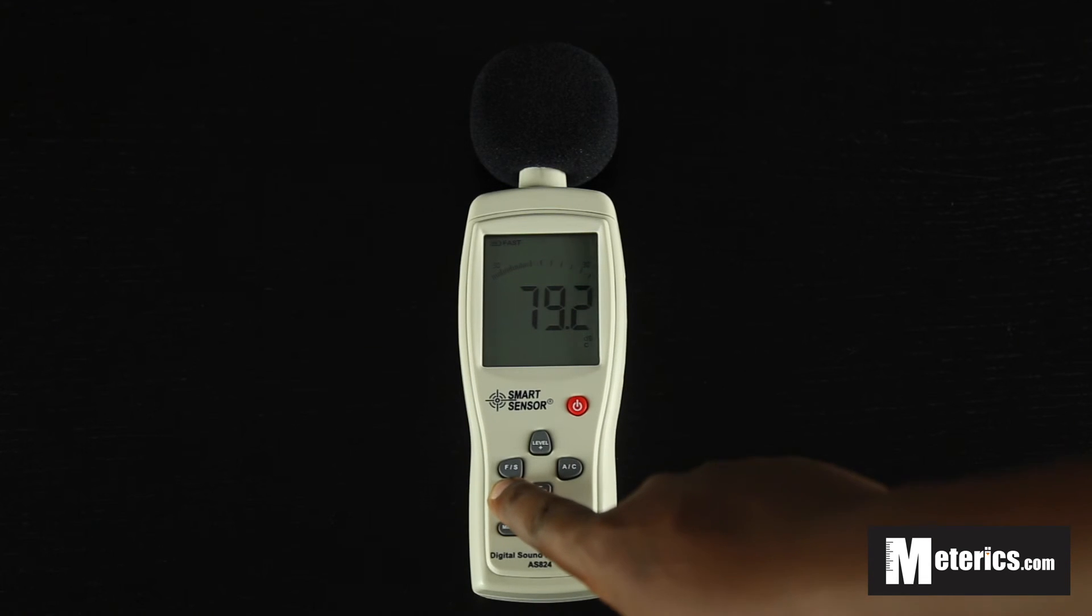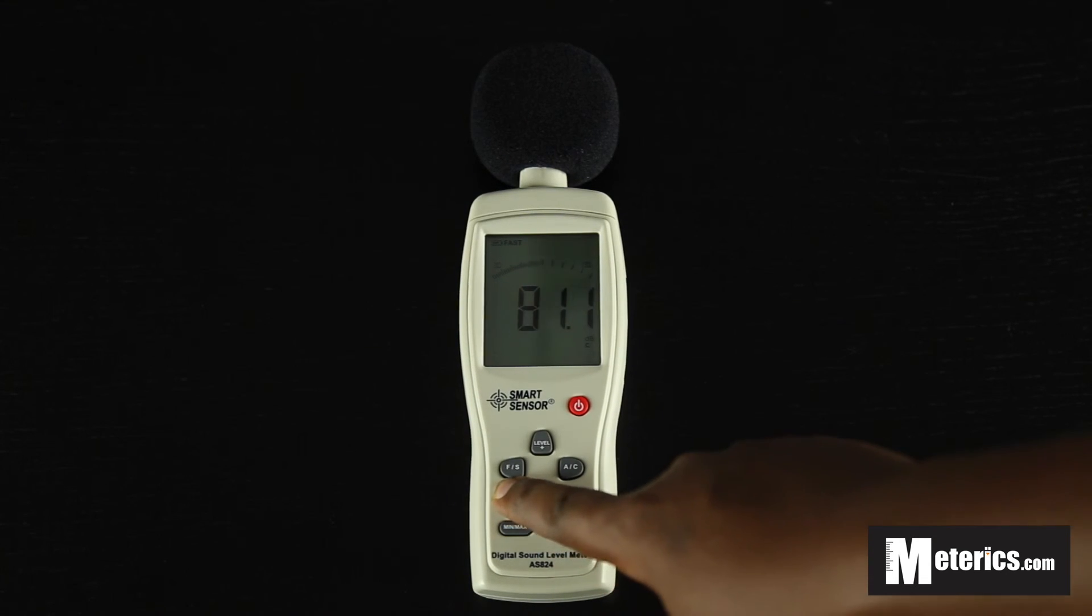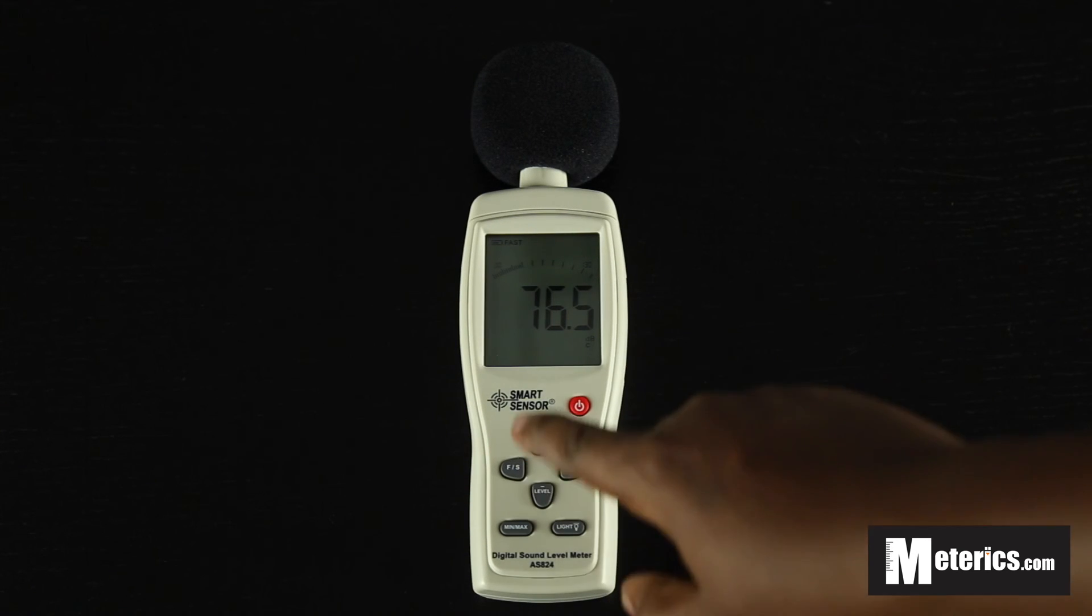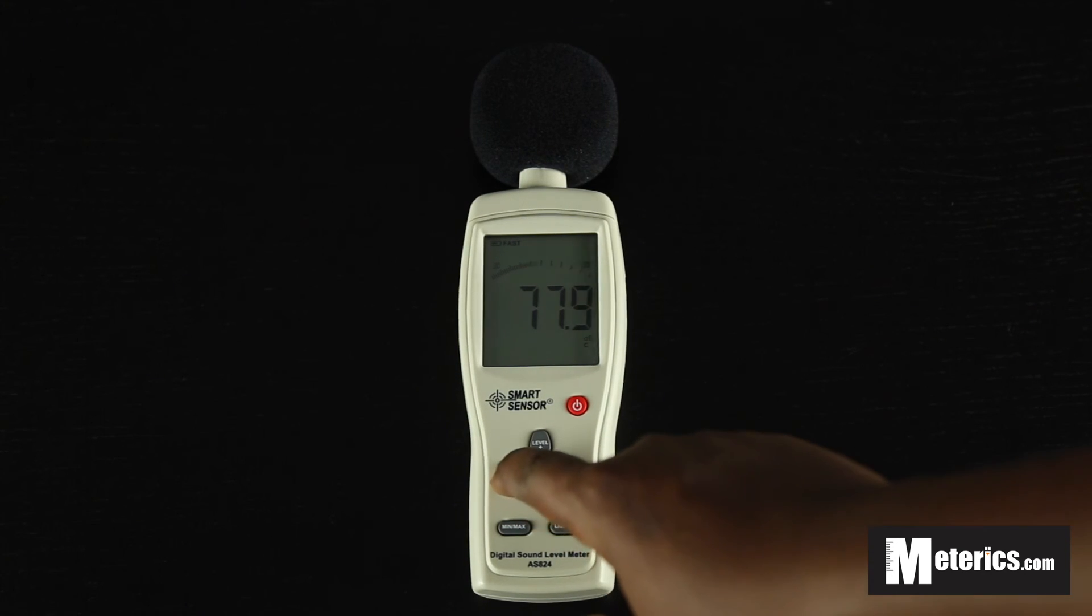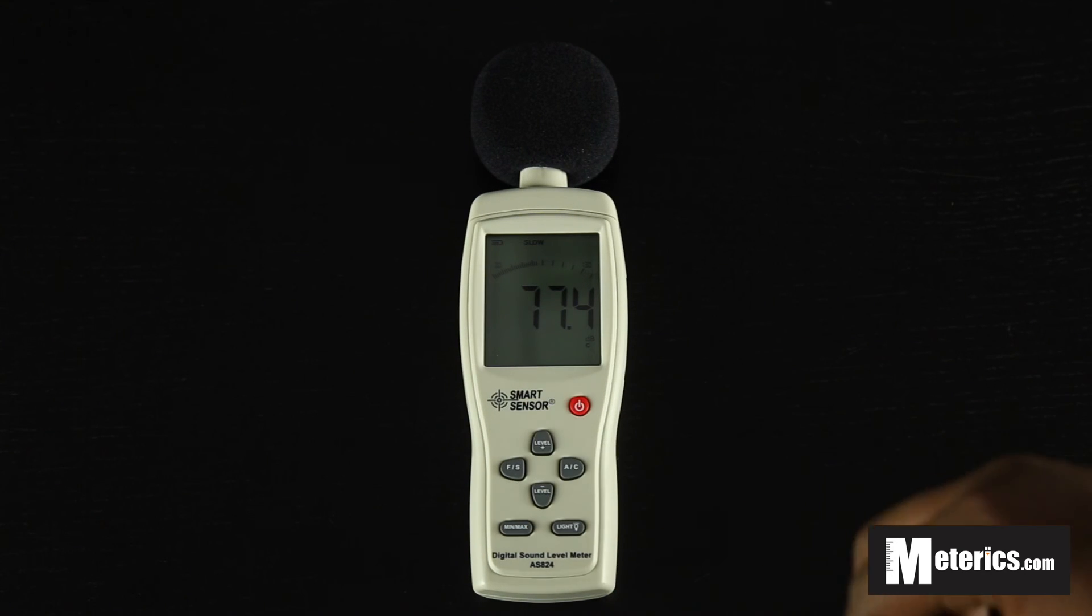We have an F and S here. What these do is they alter the resolution of the meter. So we have F for fast, like you can see now, and fast basically the resolution is 125 milliseconds. If we push this to slow it slows the resolution down to a second.